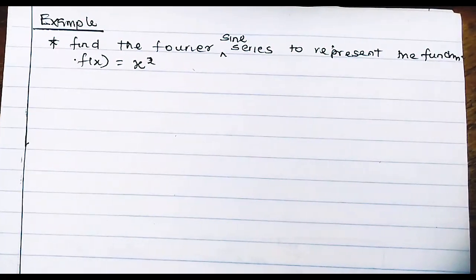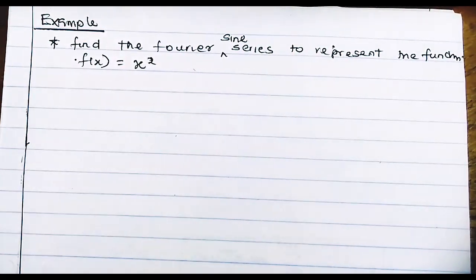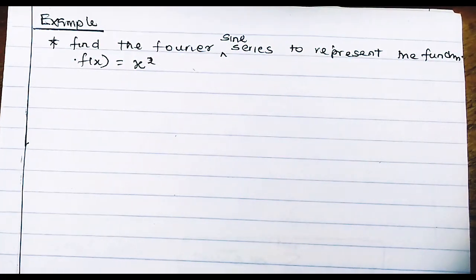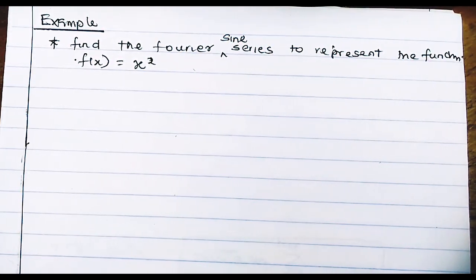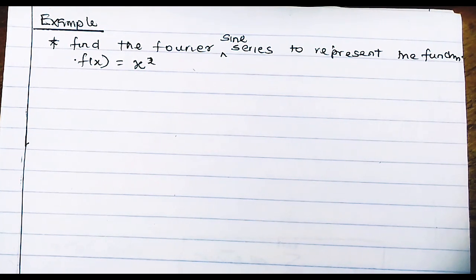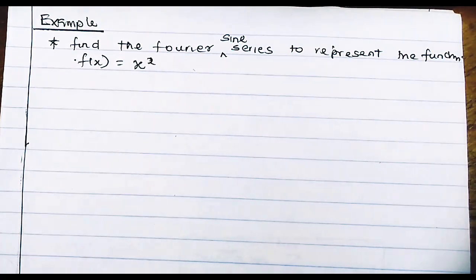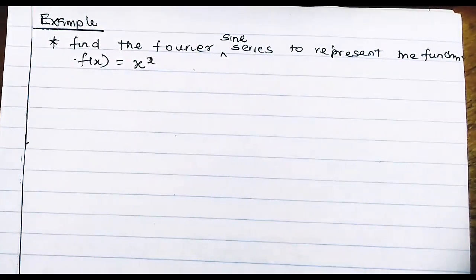On our last video, I used x squared to represent an even function, and I said even functions only contain cosine terms. But in this case, they're asking me to find the sine terms relating to x squared. I want you to know that x squared can also be assumed to be an odd function.